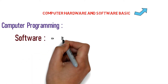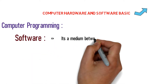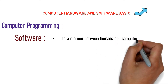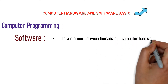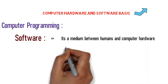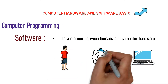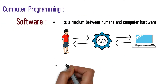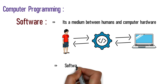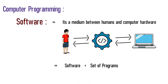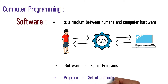In this video, we discussed how software is the interface between humans and computer hardware. What is software? Software is a set of programs. A program is a set of instructions.